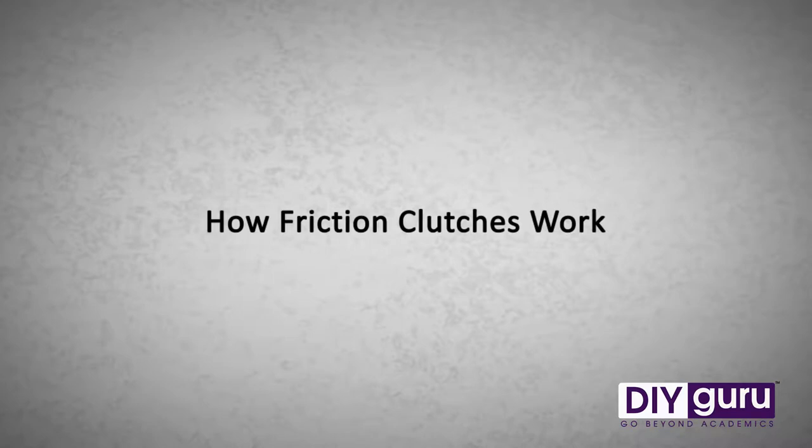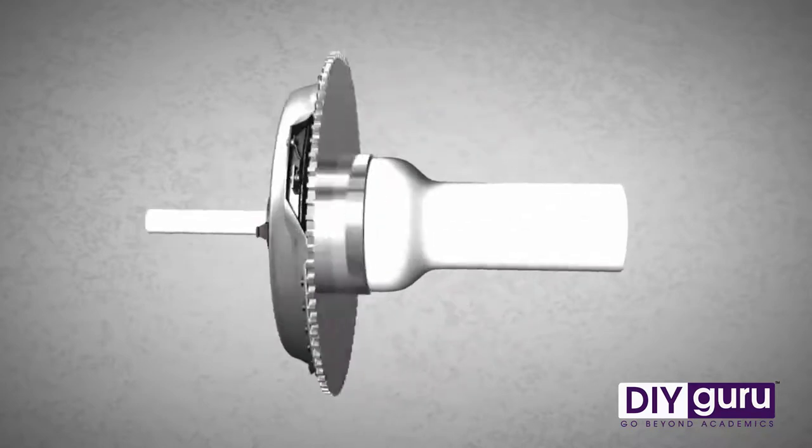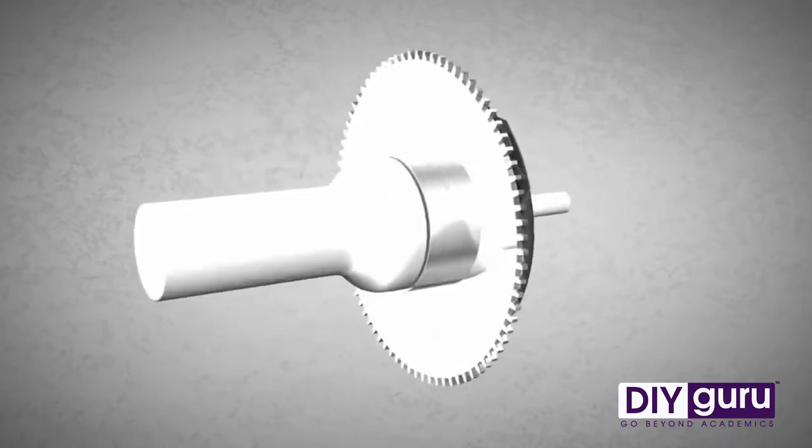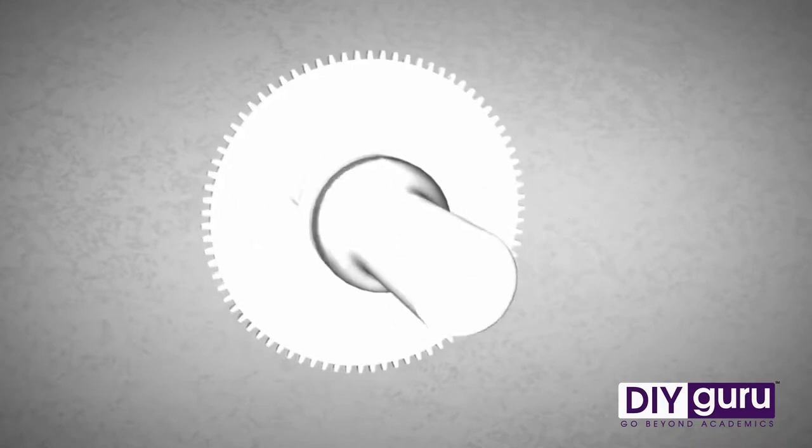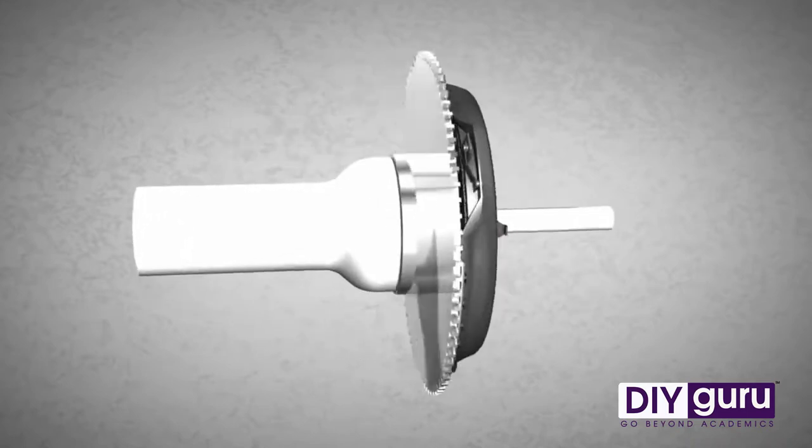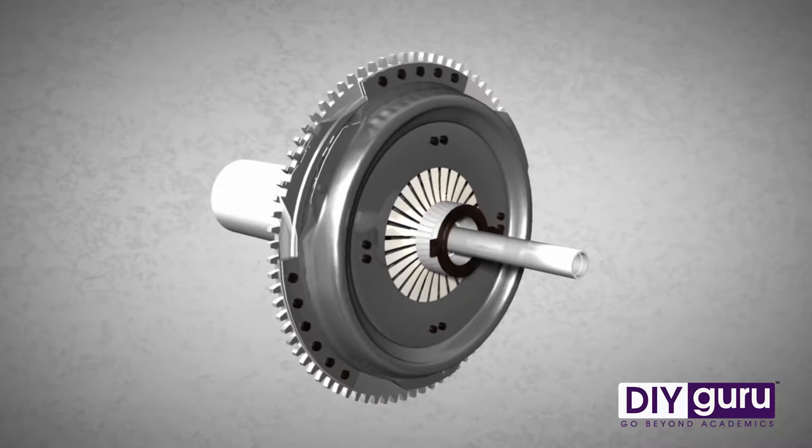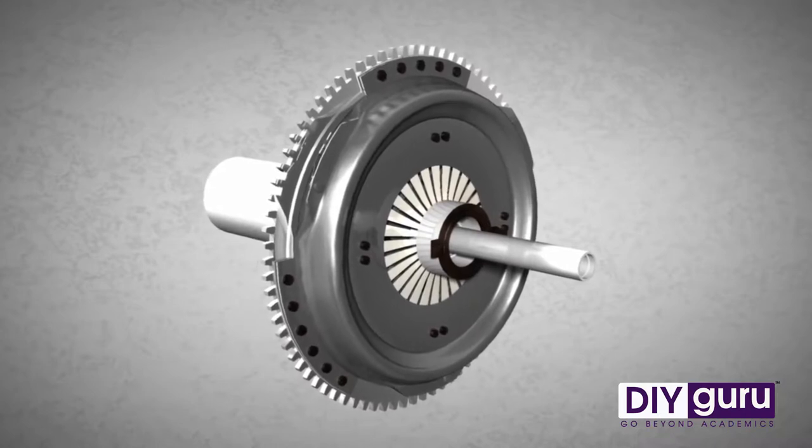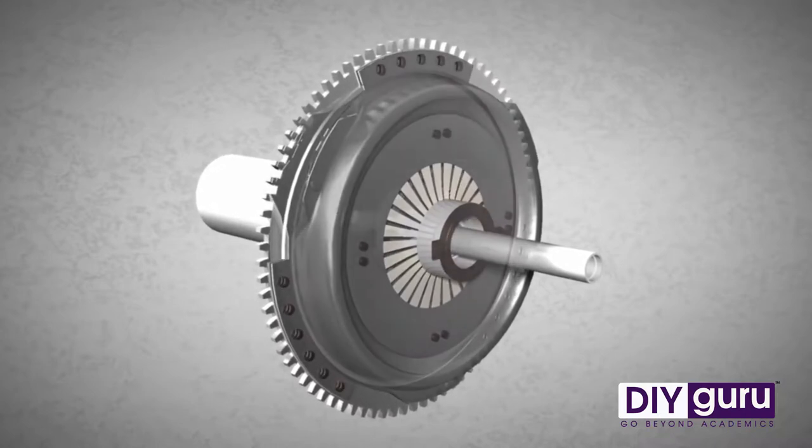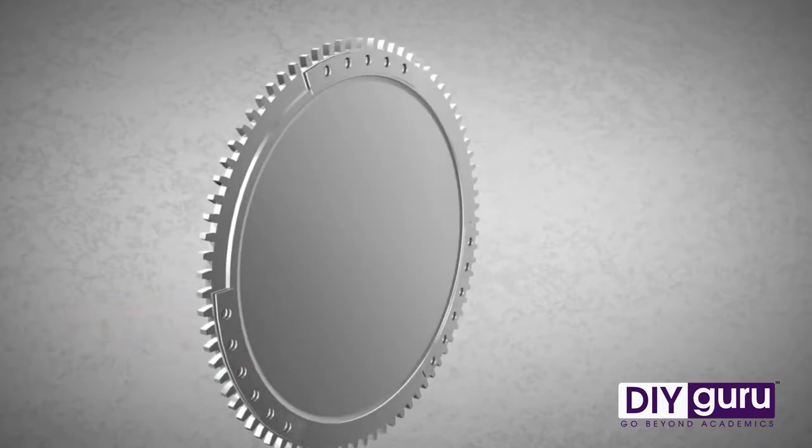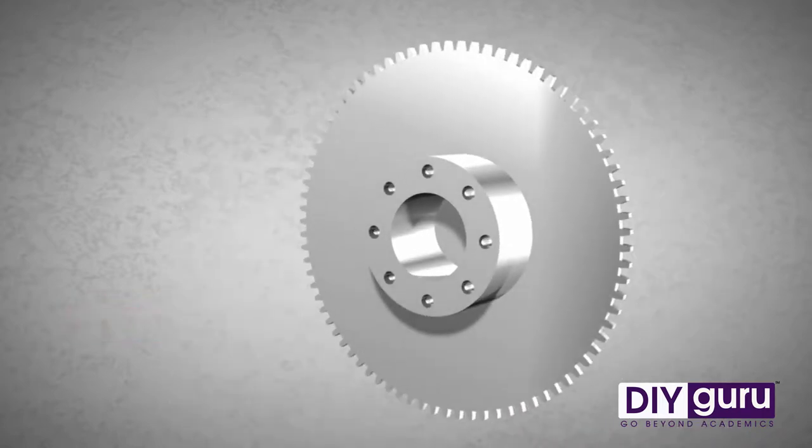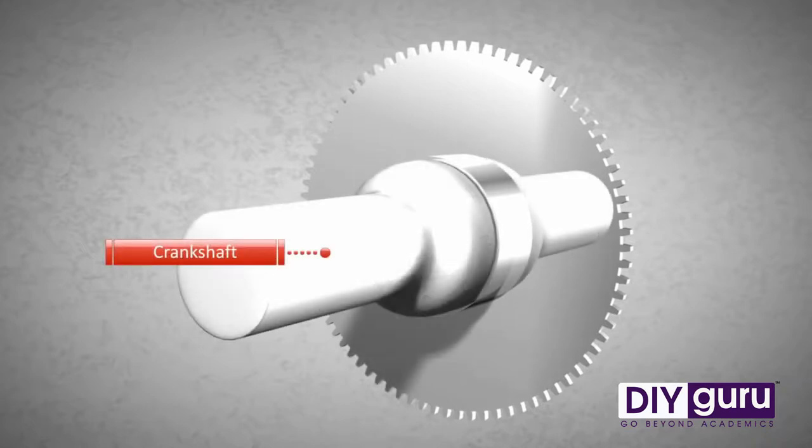Vehicles of today normally use a clutch to transmit power produced by the engine to the gearbox. The vast majority of cars and motorcycles rely on dry friction clutches, which will be explained in this animation. One of its components is the flywheel. The flywheel is connected to the engine through the crankshaft.